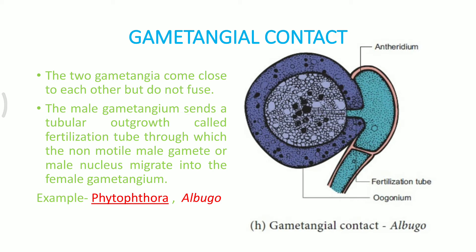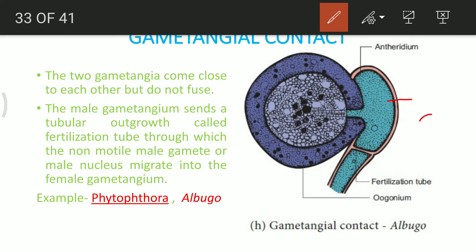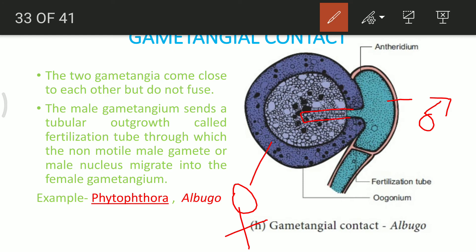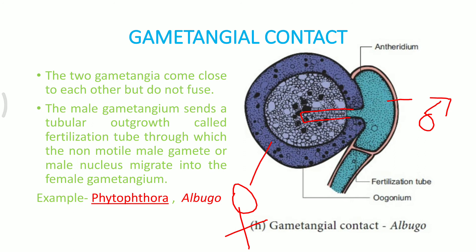Gametangial contact is the second kind of sexual reproduction in fungi, where the male gametangium sends a tubular outgrowth — a fertilization tube — and from this it can send its nucleus to the female gametangium. You can see the antheridium, which is dark blue colored, and this is the male gametangium, whereas the other structure is the female gametangium. The antheridium sends a protuberance which releases its nuclear content inside the oogonia or the female gametangium, leading to fertilization. This is seen in Albugo or Phytophthora.